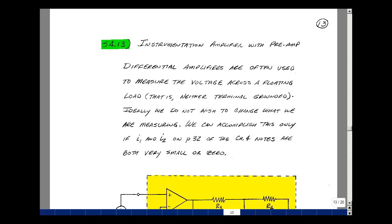In the chapter 4 notes, we looked at a basic building block we called a differential amplifier. These are often used to measure the voltage across the floating load. In other words, neither terminal is grounded. Ideally, you don't want to change the thing that you're measuring, but with our differential amplifier in the class notes, we had a current I1 and I2 coming into the input terminals, and this would draw current from whatever we're measuring.